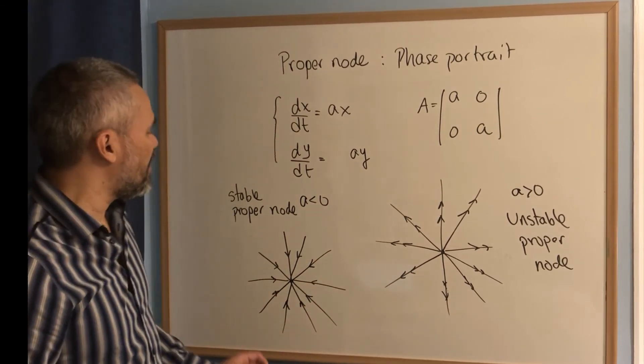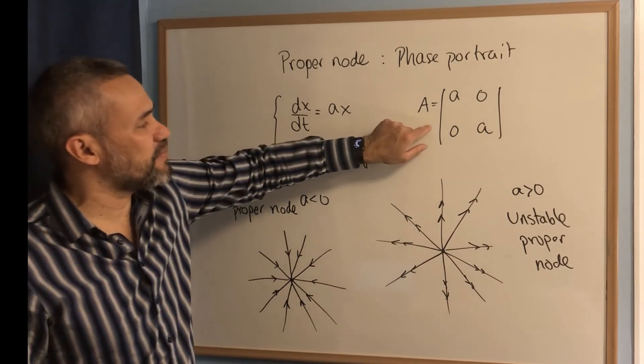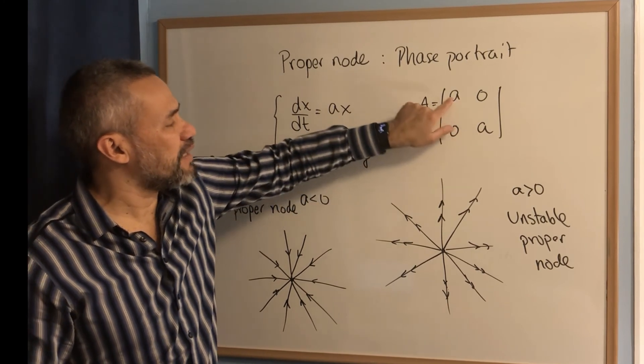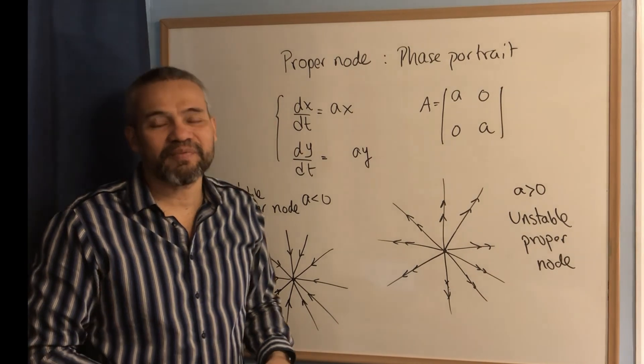Okay, then we have the two cases of a proper node. And that happens when the matrix is diagonal. And actually it's a multiple of the identity matrix. Okay, that's it.